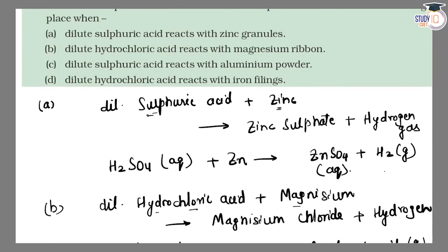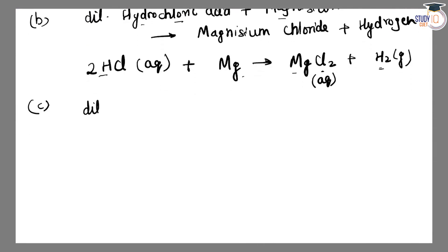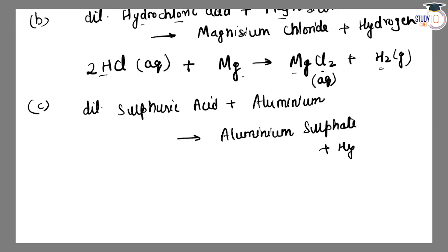Next, Part C: dilute sulfuric acid reacts with aluminum powder. So dilute sulfuric acid plus aluminum — this is again a metal-acid reaction. Products are aluminum sulfate and hydrogen gas.